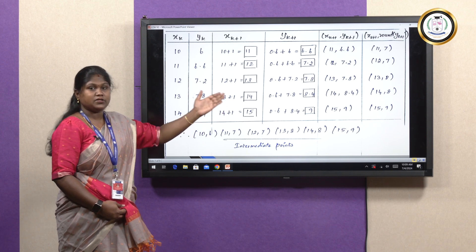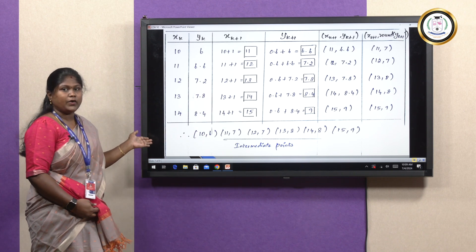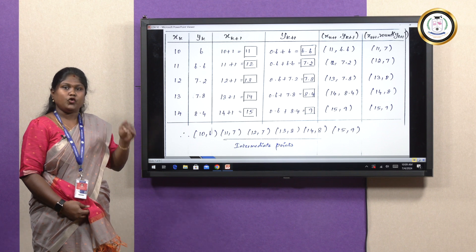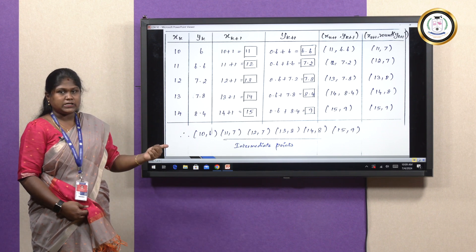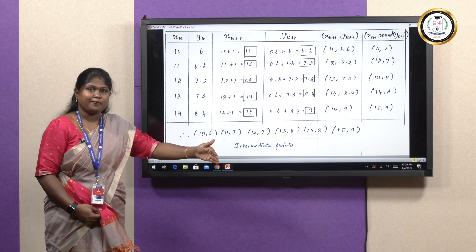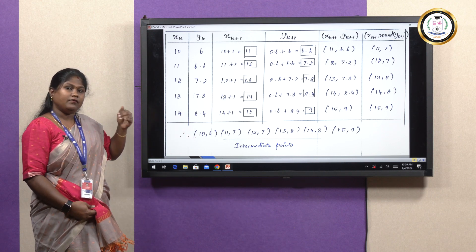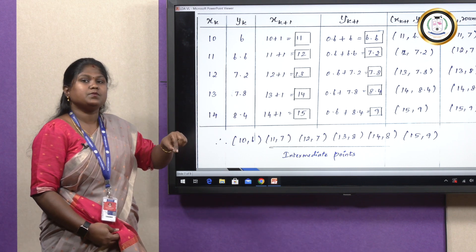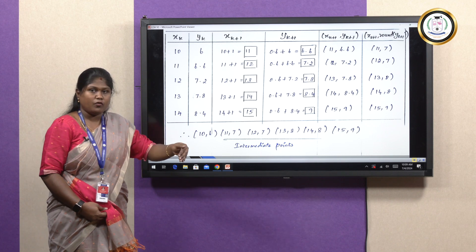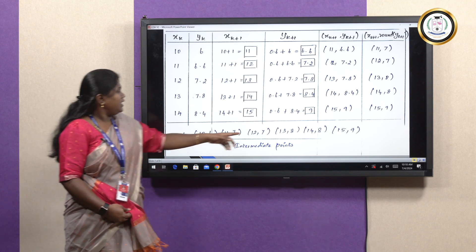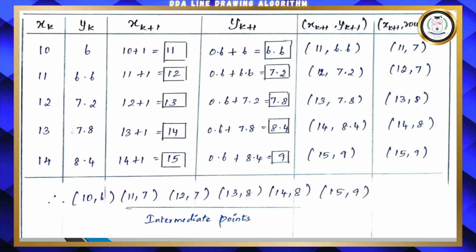Taking (14, 8.4) as XK, YK and applying the formula once more, we get X = 15 and Y = 9. This iteration goes on until we reach the second endpoint given in the question. Our second endpoint was (15, 9), and we have arrived at it. We started from one point and reached the other, finding intermediate points along the way by repeatedly making each computed point the new XK, YK. So (10, 6) and (15, 9) were given, and the intermediate points have been found using the DDA line drawing algorithm.